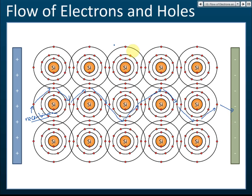So there are two types of flow in a semiconductor: electrons move toward the positive plate, and holes move toward the negative plate. Both flows contribute to conducting electric current.